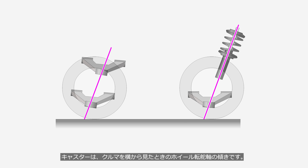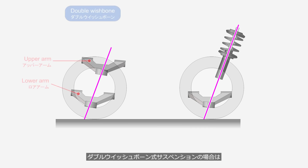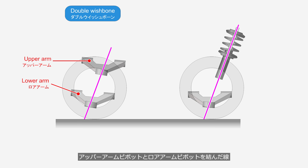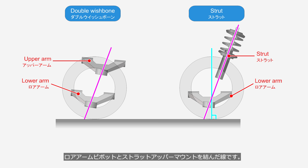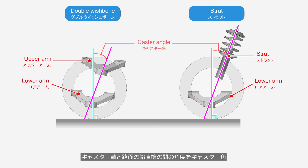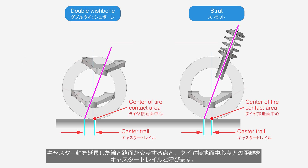Caster is the tilt of the steering axis of a road wheel when the vehicle is viewed from the side. In a double wishbone suspension, it is the line connecting the upper arm pivot and the lower arm pivot. In a strut suspension, it is the line connecting the lower arm pivot and the strut upper mount. The angle between the caster axis and the vertical line to the road surface is called the caster angle, and the distance between where the extended caster axis intersects the road and the center point of the tire contact area is called the caster trail.